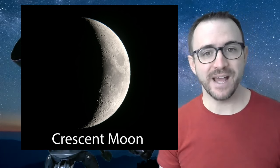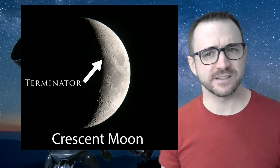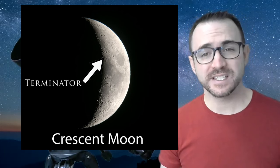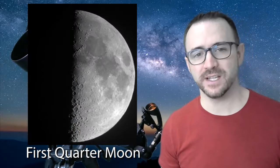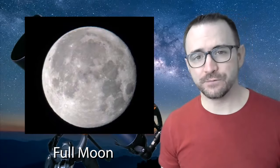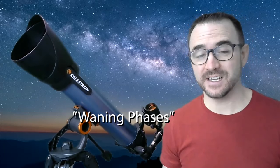As each day and night passes, the terminator, that's the line between night and day on the moon, exposes more and more of the moon's surface. After the crescent phase comes first quarter, and then gibbous, and then the full moon. After full moon, the moon rises later and later each night. During this period, known as the waning phases, you'll have moonless skies until later at night, or earlier in the morning.